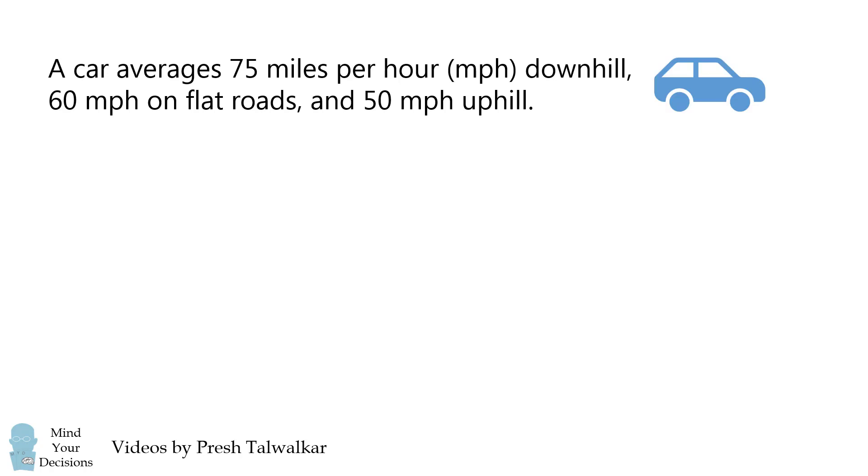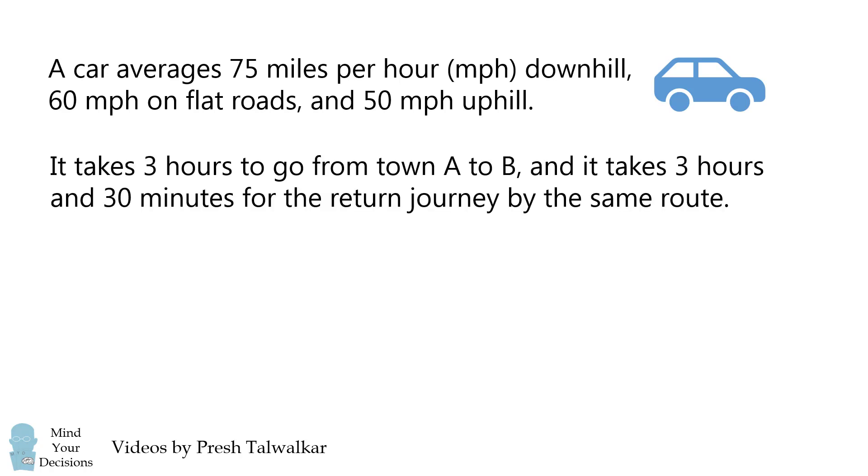A car averages 75 miles per hour downhill, 60 miles per hour on flat roads, and 50 miles per hour uphill. It takes three hours to go from town A to town B, and it takes three hours and 30 minutes for the return journey by the same route.